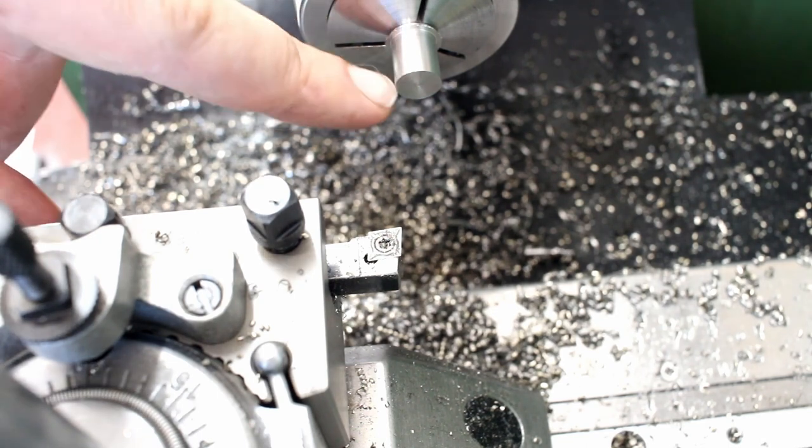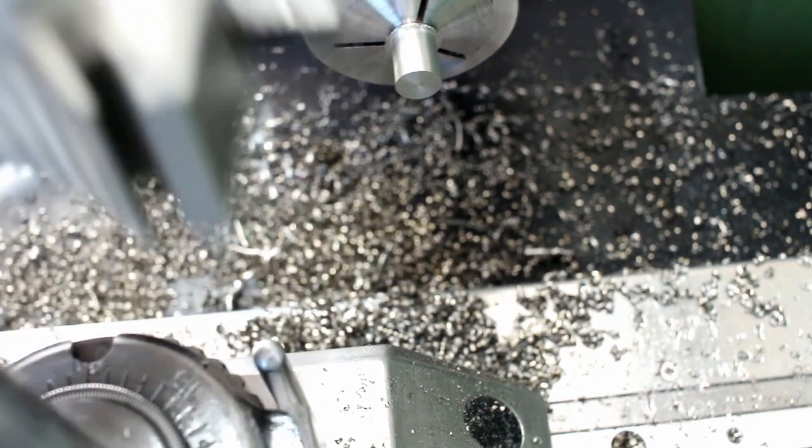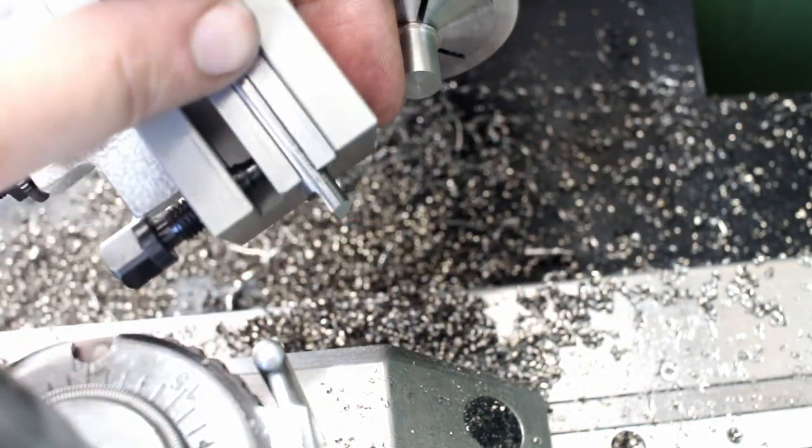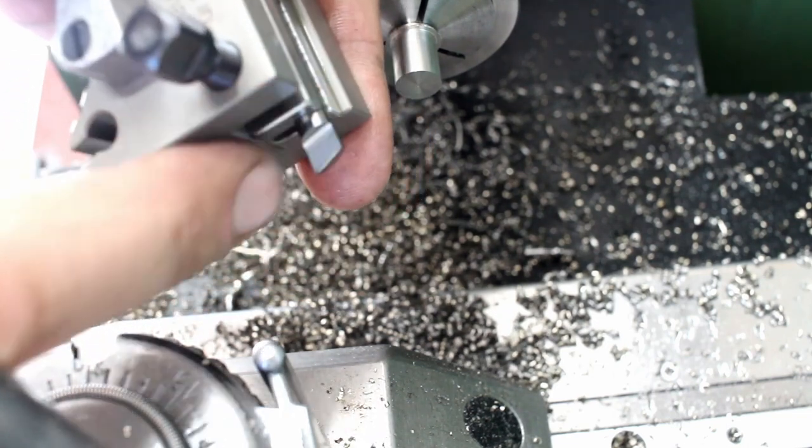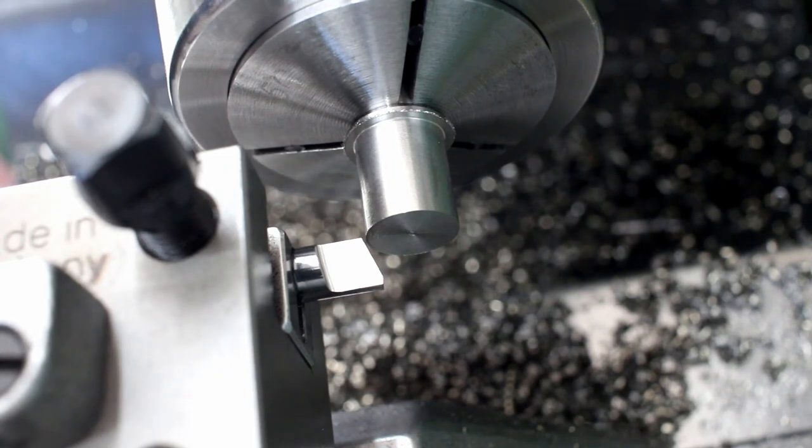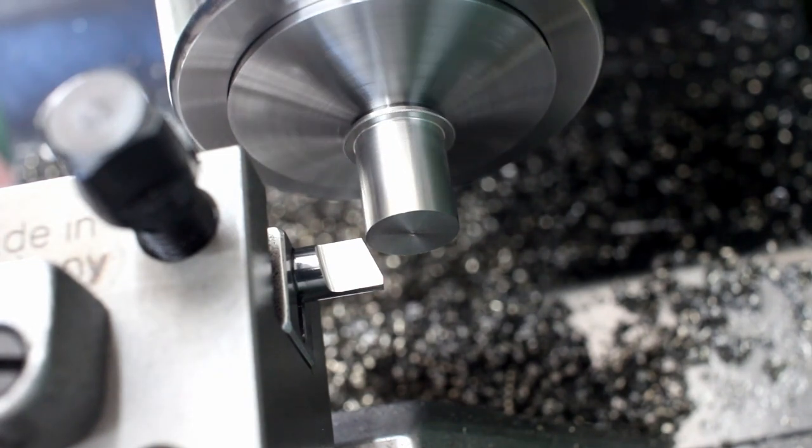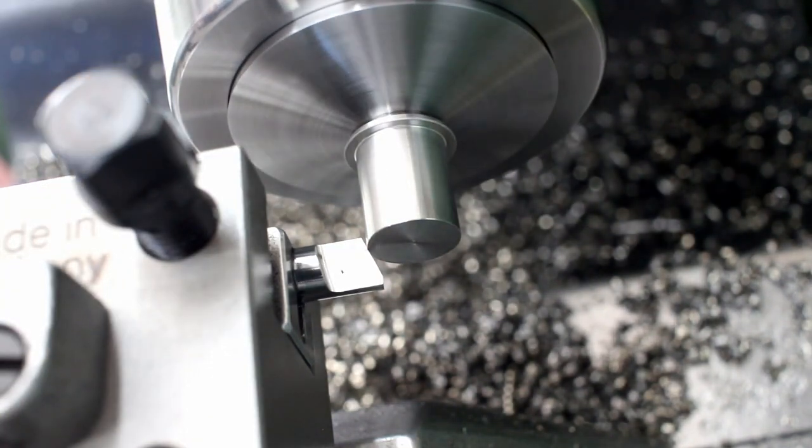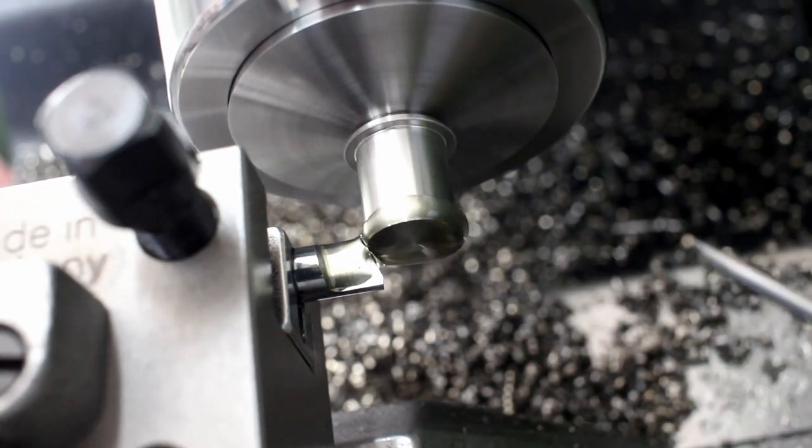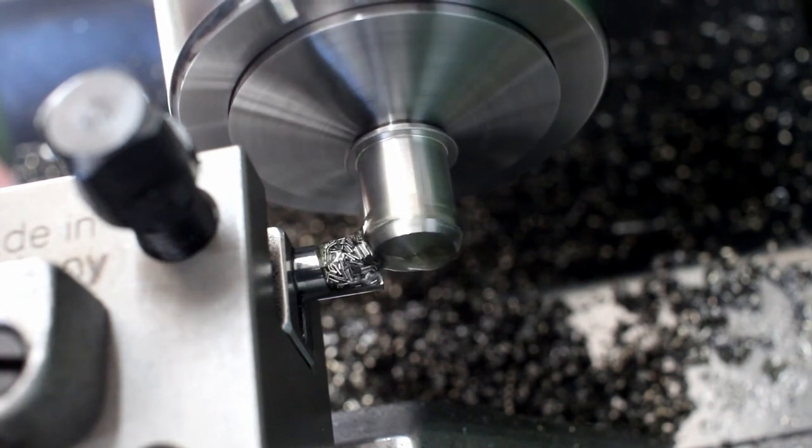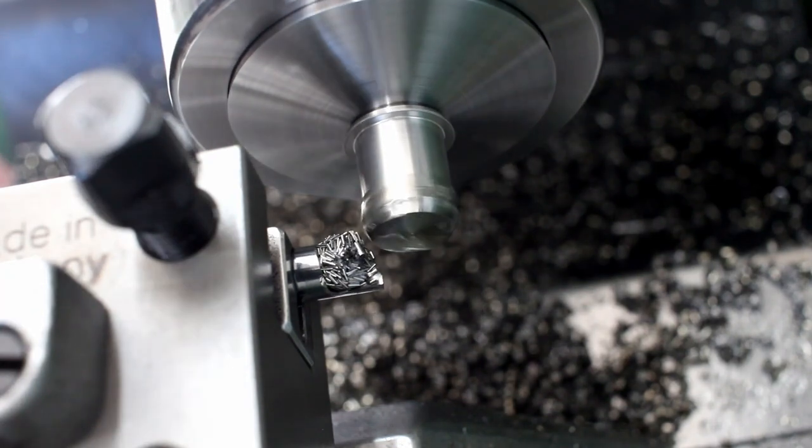We need a 20-degree chamfer on the end here. I have a tool - this is just a piece of six millimeter carbide split in half on the dip-bit grinder, ground to 20 degrees and hit on the diamond lap for a good finish. We run this pretty slow, maybe two or three hundred RPM. We need cutting oil with a tool this wide. There we go, that's a nice 20-degree lead-in chamfer.